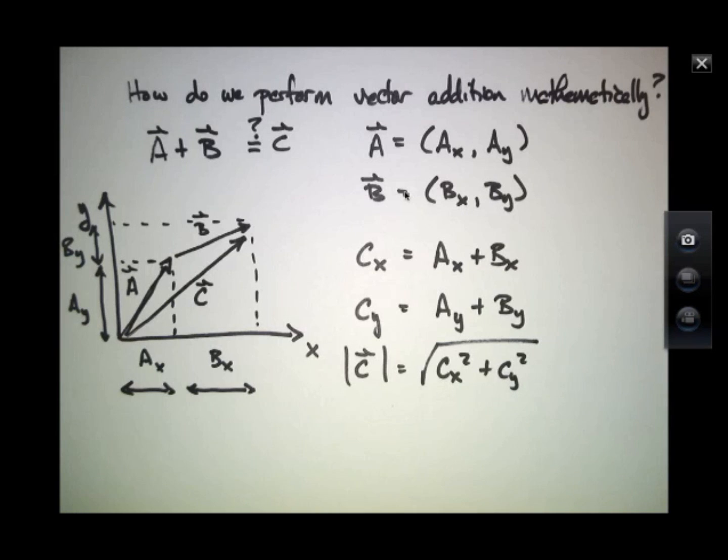So all of this information can be found from the original components AX, AY, and BX, BY. And then we can learn everything we need to know about the vector sum.